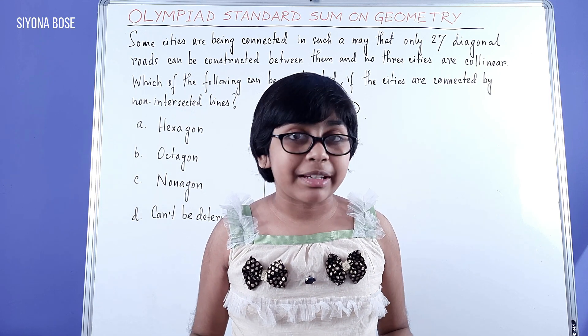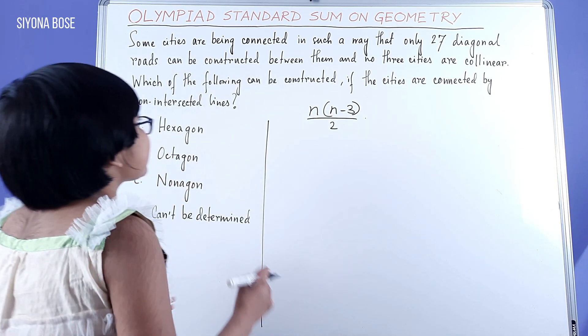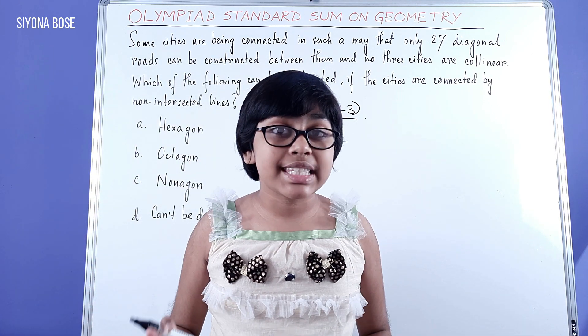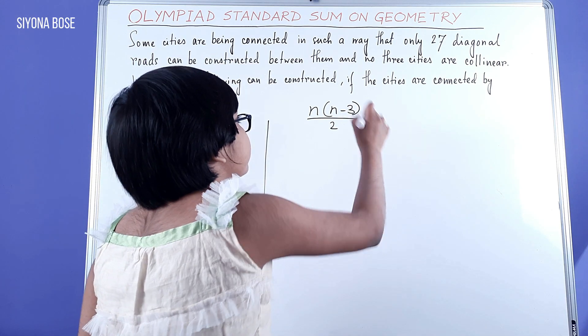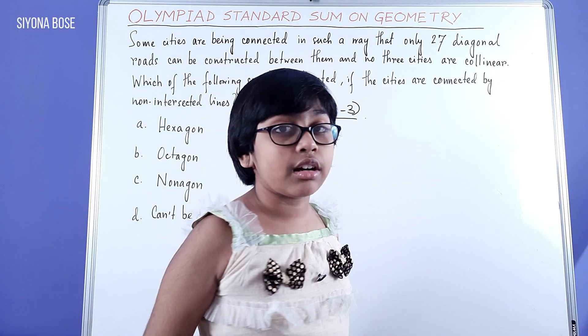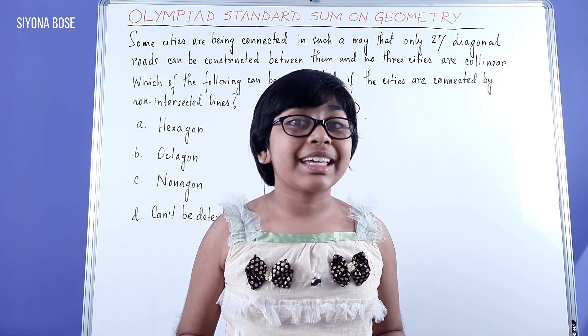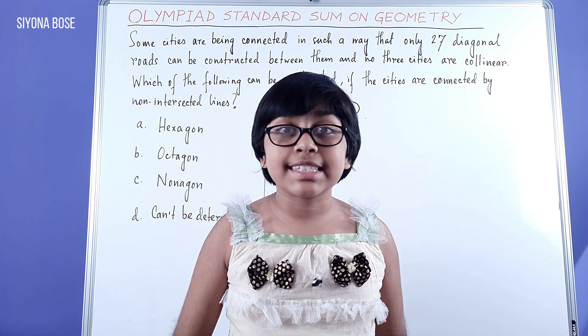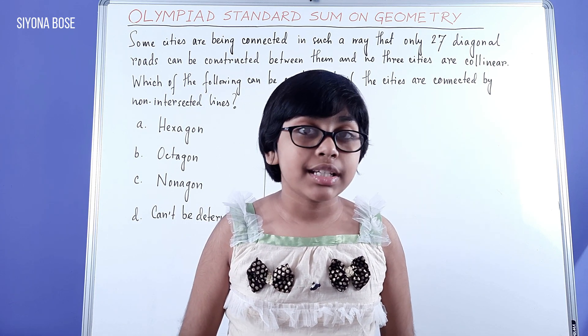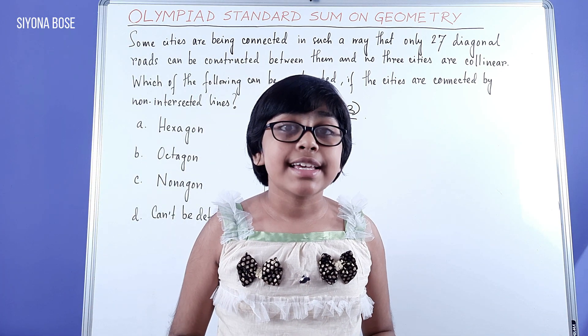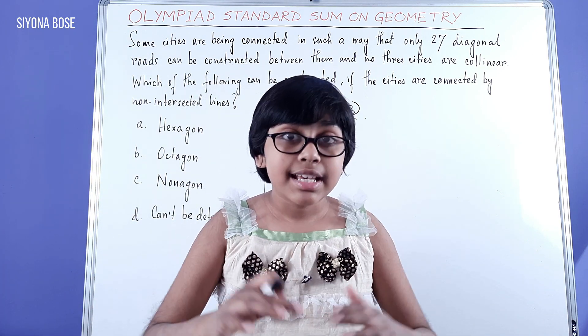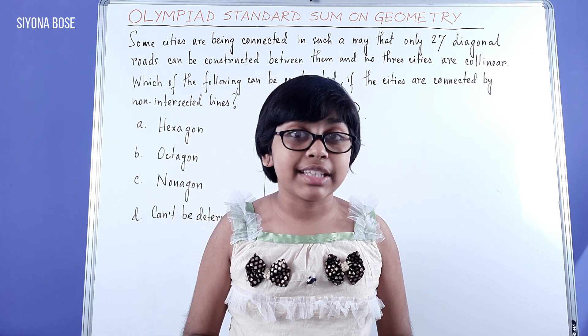Now where is this coming from? You see, in this we have some cities, but we don't have the number of cities. However, we have the information that no three cities are collinear. That means from here we can understand that maybe these cities are connected in a form of a polygon, and anyways, even the options are names of polygons.